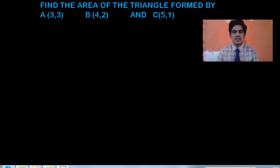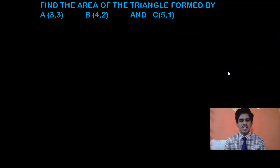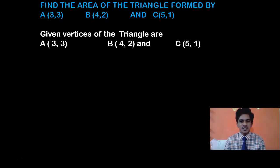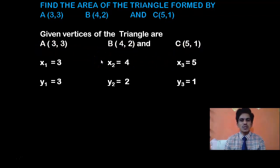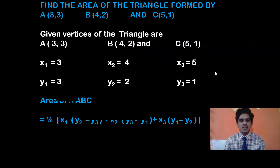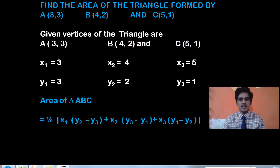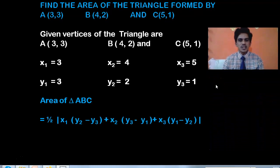As we know, we can calculate the area of a triangle formed by different vertices. Here I have 3 vertices: A is (3, 3), B is (4, 2), and C is (5, 1). So x1, y1 is 3, 3; x2, y2 is 4, 2; and x3, y3 is 5, 1. The formula is: area = 1/2 × |x1(y2 − y3) + x2(y3 − y1) + x3(y1 − y2)|.